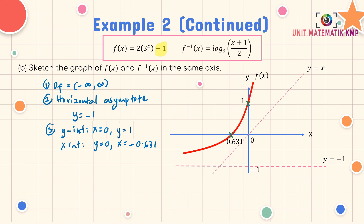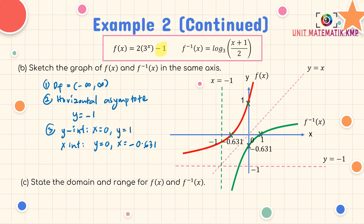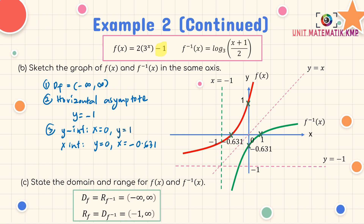Draw the straight line y = x and reflect all the points. The horizontal asymptote becomes the vertical asymptote for f⁻¹. The x-intercept is at 1 and y-intercept at −0.631. Join the points — this is the graph of f⁻¹(x). For part C: domain of f equals range of f⁻¹, which is negative infinity to infinity. Range of f equals domain of f⁻¹, from −1 to infinity.